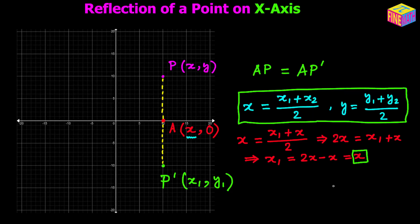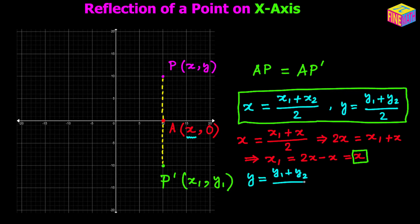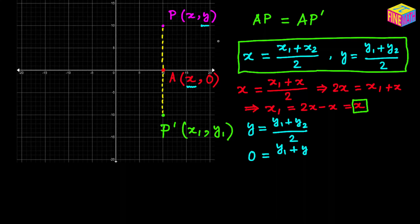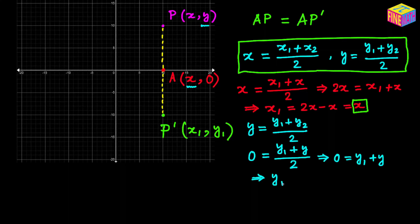Now for the y coordinate formula: 0 equals (y₁ + y) divided by 2, since the y coordinate of the midpoint A is 0. Multiplying both sides by 2 gives 0 equals y₁ plus y, so y₁ equals negative y. We have now found both coordinate values for the reflected point.